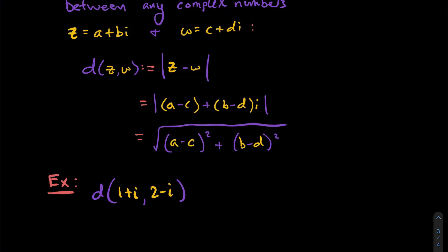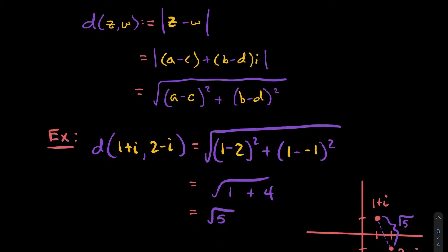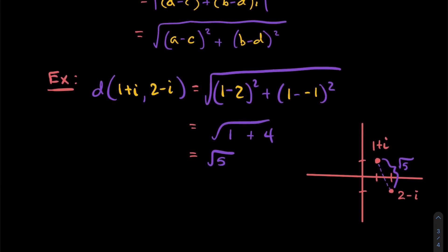d is a function where you input two complex numbers and it outputs a real number. For example, the distance between 1 + i and 2 − i: take (1 − 2)² + (1 − (−1))² = 1 + 4 = 5, so the distance is √5. So 1 + i and 2 − i are √5 units apart from each other.